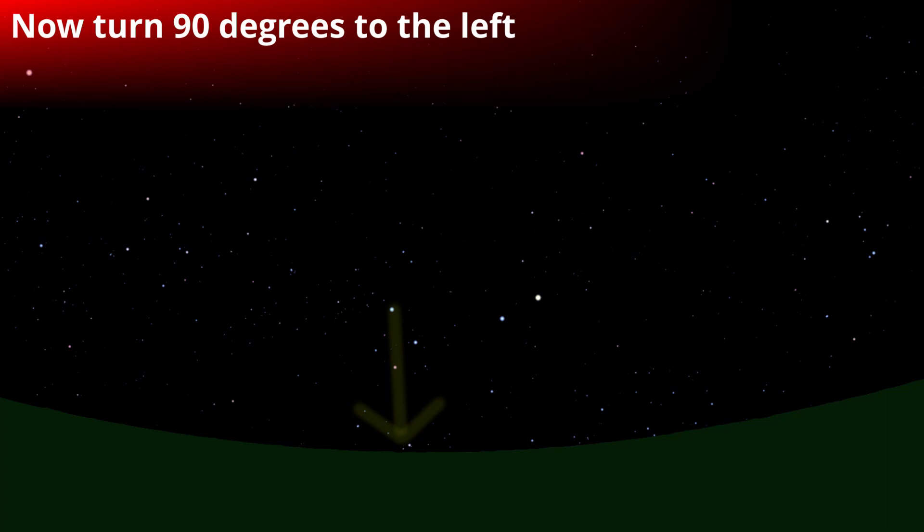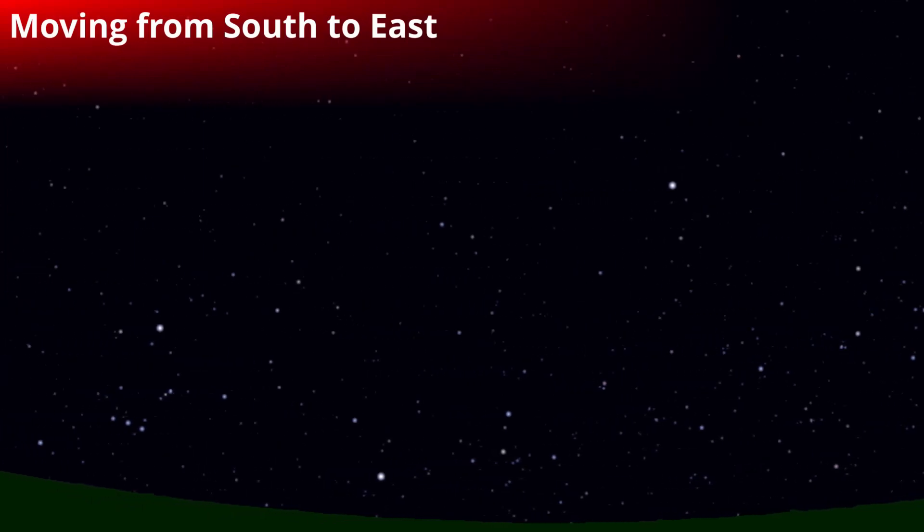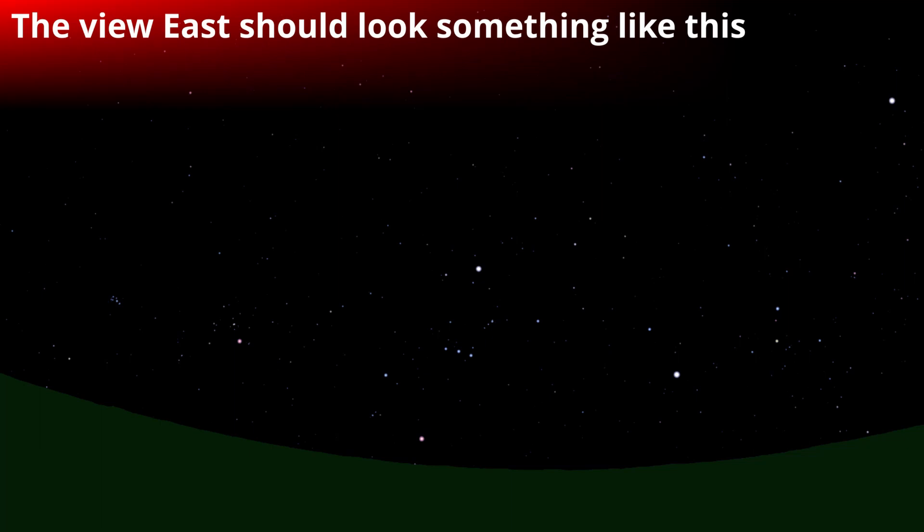Yep, so now you know where south is. Turn left 90 degrees and you'll be pointing east. And that's very important because that's where we want to look. There's a couple more markers for us to find Matariki.